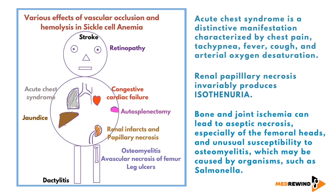The various effects of vascular occlusion and hemolysis in sickle cell anemia are illustrated in a diagram for easy recall. These include stroke, retinopathy, congestive cardiac failure, autosplenectomy, renal infarction and papillary necrosis, osteomyelitis, avascular necrosis of the femur, leg ulcers, dactylitis, jaundice, and acute chest syndrome. Acute chest syndrome is a distinctive manifestation characterized by chest pain, tachypnea, fever, cough, and arterial oxygen desaturation.